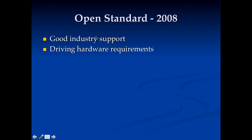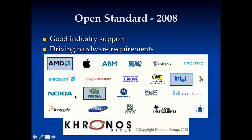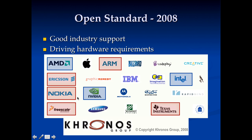OpenCL as an open standard had good industry support in 2008 and was actually driving hardware requirements at that point — the features required for OpenCL were starting to push how people designed GPUs. When OpenCL first came out, the companies on board included the expected players: Intel, NVIDIA, and AMD. But you also see a bunch of other players: Ericsson, Nokia, ARM, Freescale, and Texas Instruments.